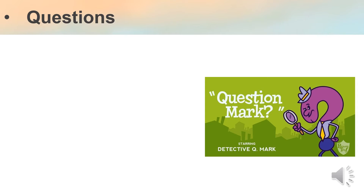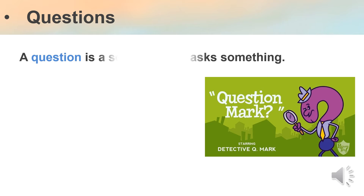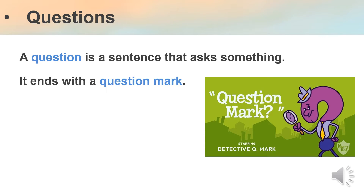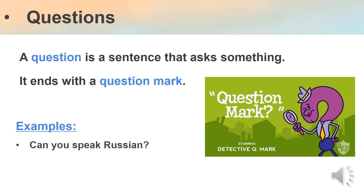Then we have questions. A question is a sentence that asks something — it asks you about something, and it has a question mark at the end. So a question ends with a question mark. Look at the examples. "Can you speak Russian?" — here I'm asking you something, which is why I need to add a question mark at the end.